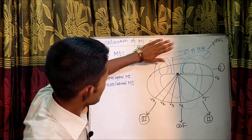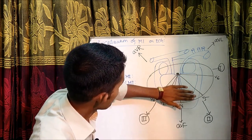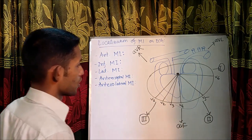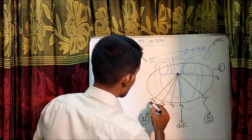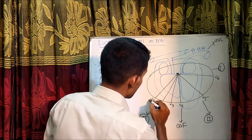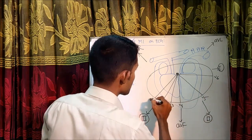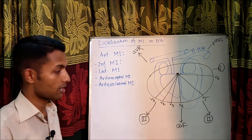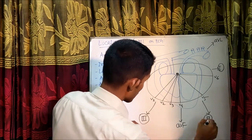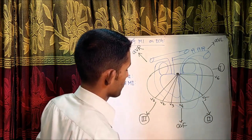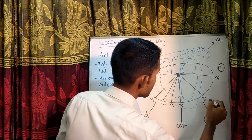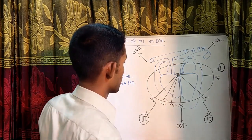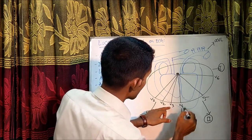So, you can see that this is the anterior aspect of the heart. This is the inferior aspect of the heart. And this is the lateral aspect of the heart. So, now we can see that V1 to V6 reflects the anterior aspect of the heart — the whole anterior aspect. And 2, 3, aVF reflects the inferior aspect of the heart. And V5, V6, 1 and aVL reflects the lateral aspect of the heart.